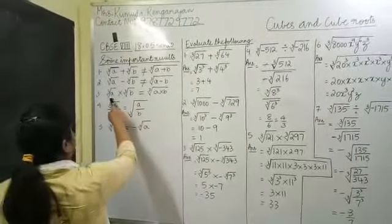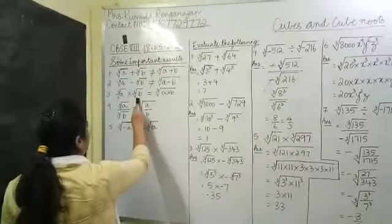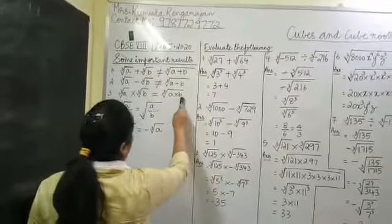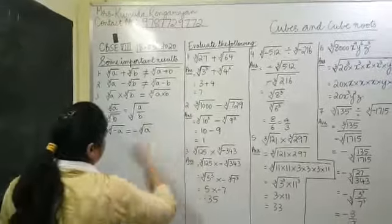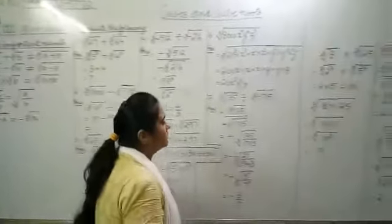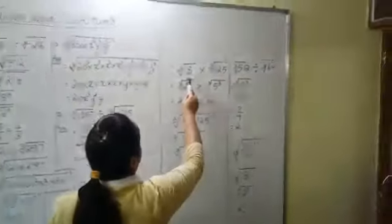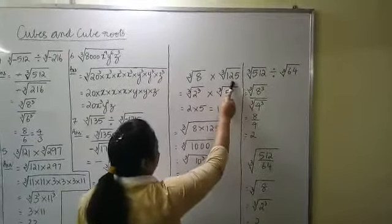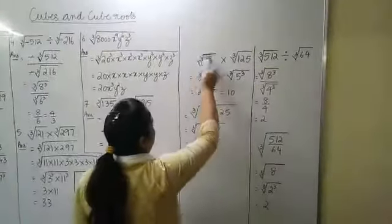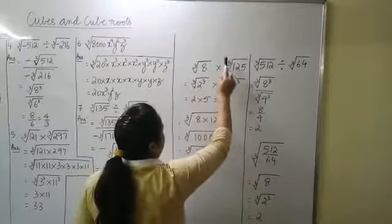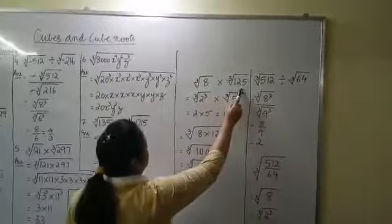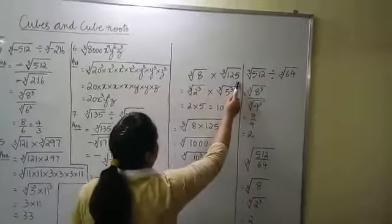This result says cube root of A into cube root of B is equal to cube root of A into B. Let's understand this with an example. Here you see cube root of 8 into cube root of 125, which is like cube root of A into cube root of B. Let's find this first. What's the value of this expression?